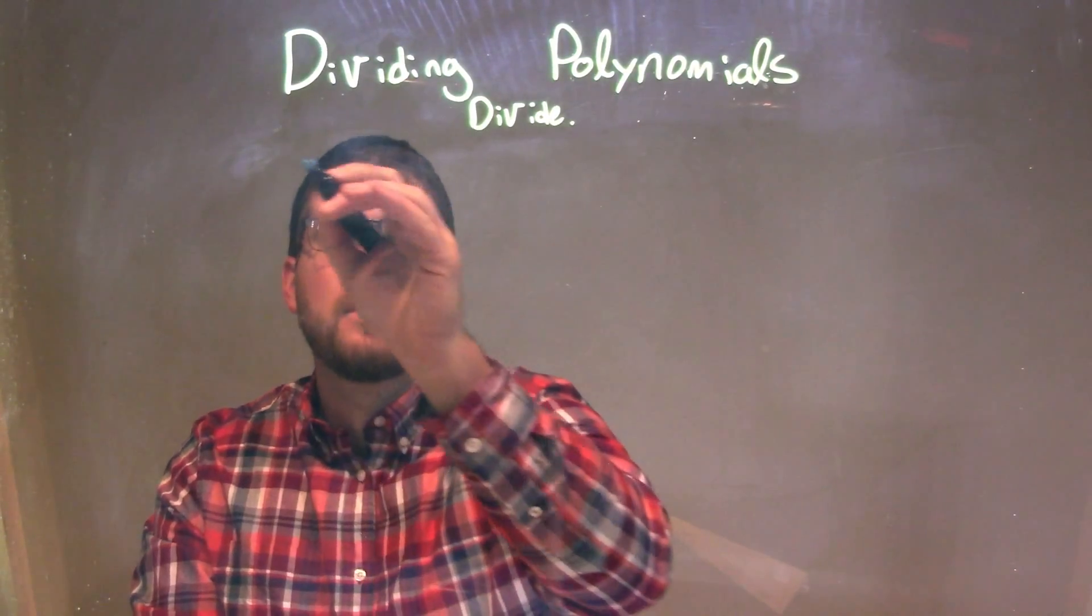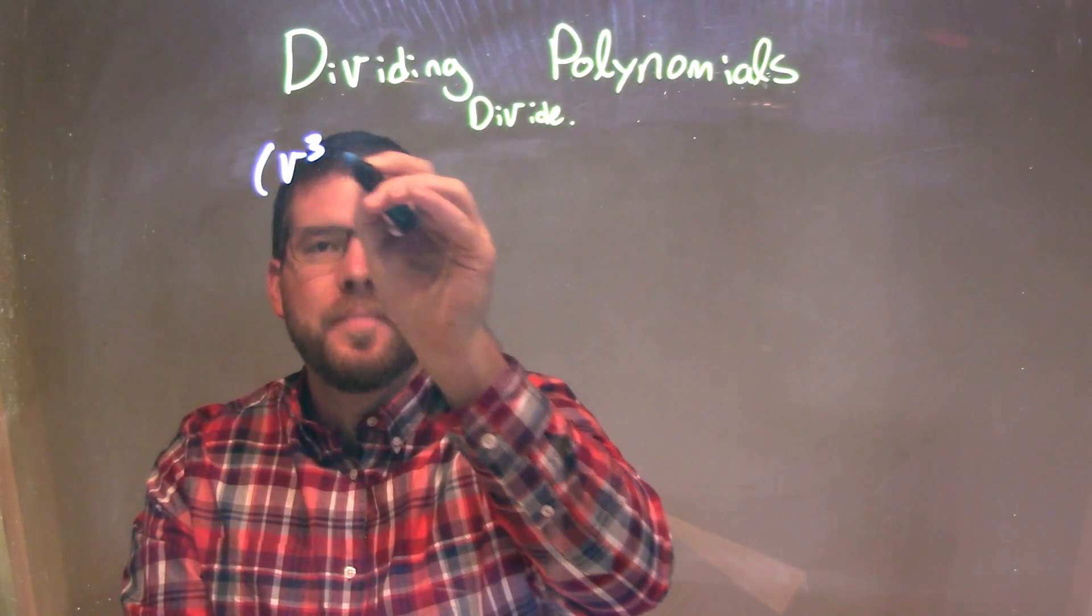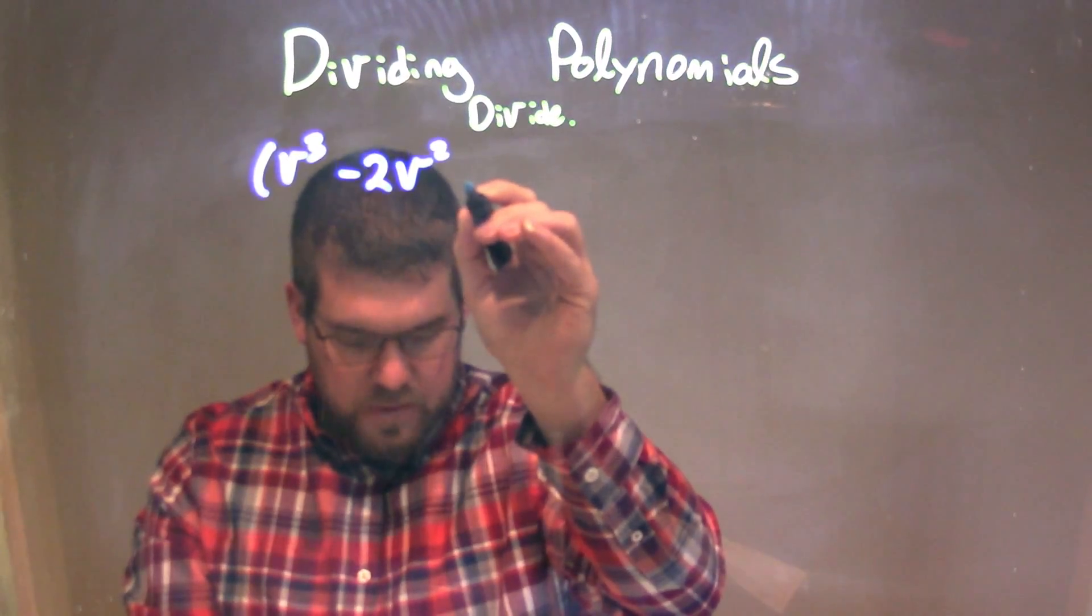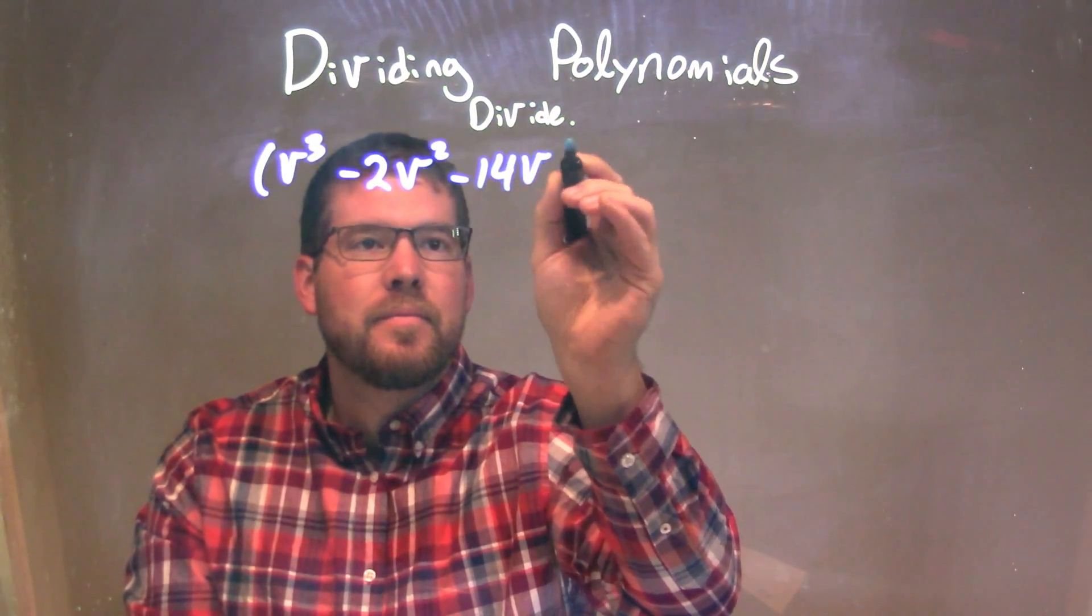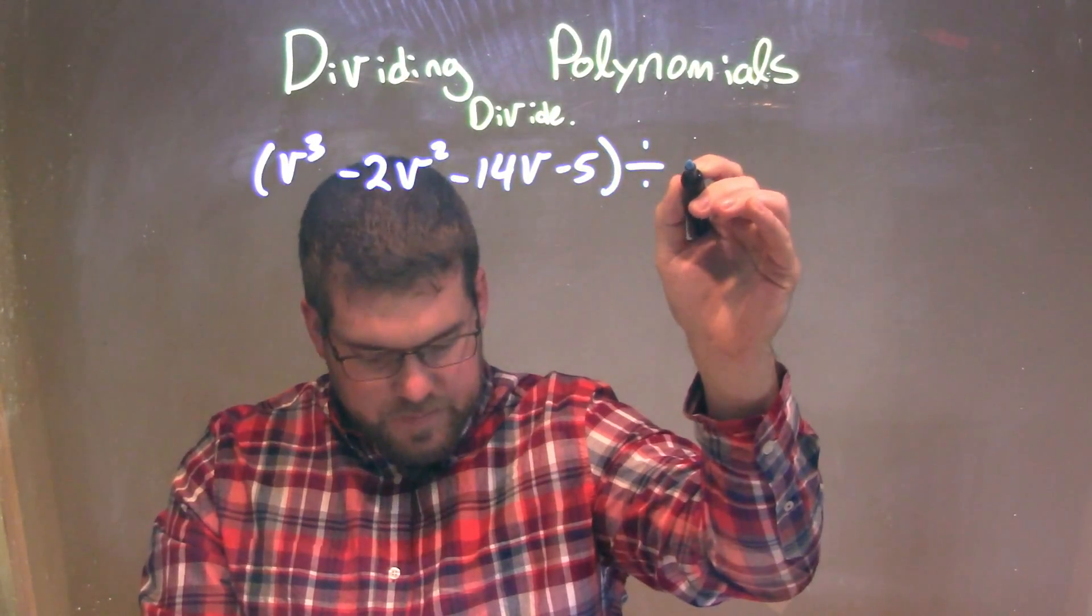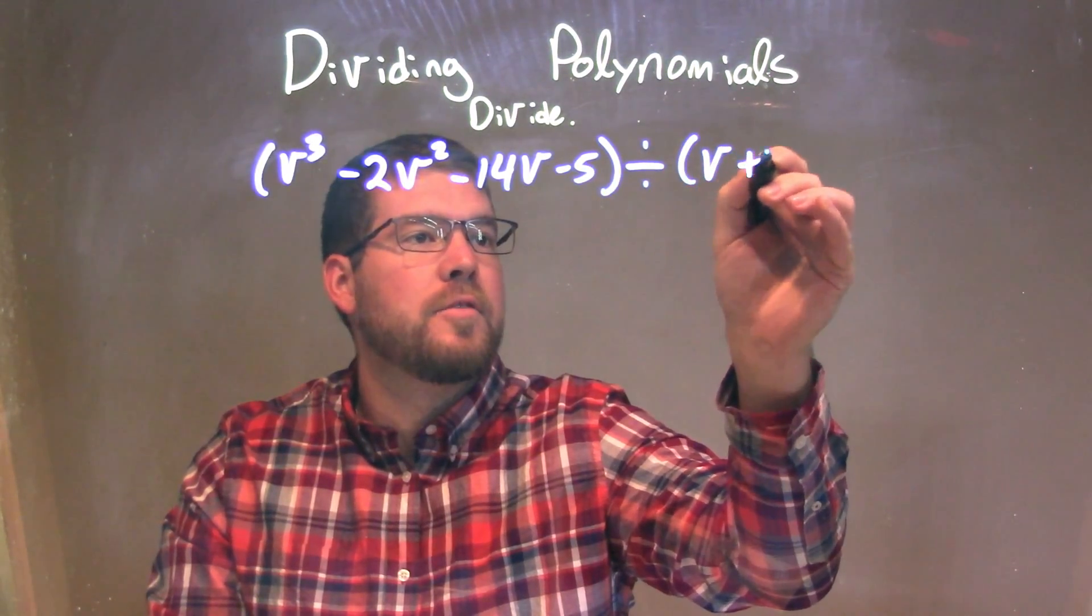So if I was given this problem, v³ - 2v² - 14v - 5 divided by v + 3.